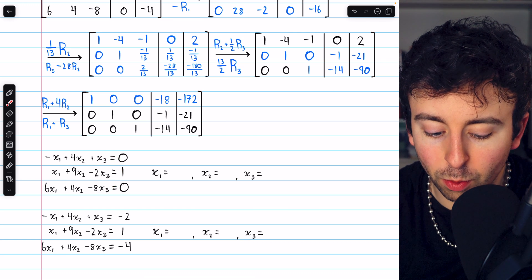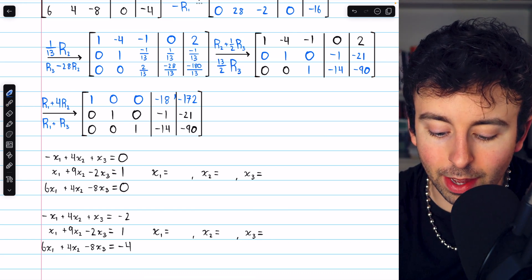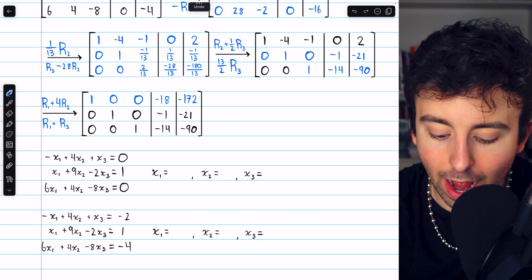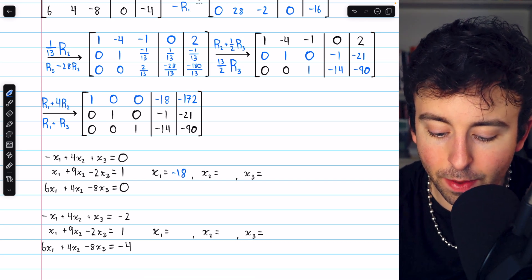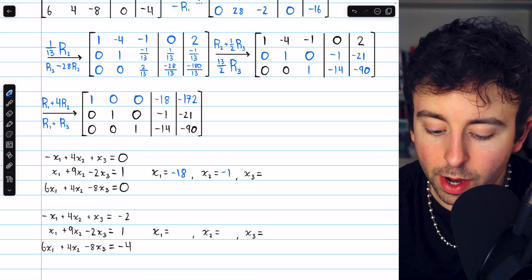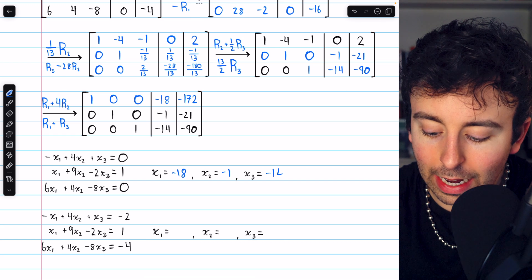Here is the first one, and we can see from this column of constants that the solutions are x1 equals negative 18, x2 equals negative 1, and x3 equals negative 14.